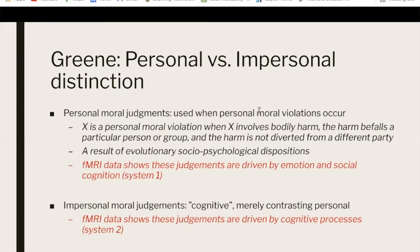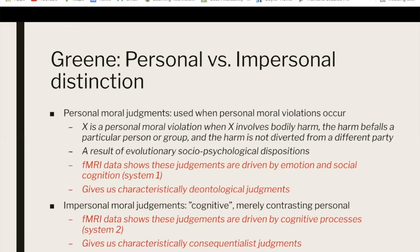These neuroscientific data led Greene to stronger normative conclusions. He claims that personal and emotional processes bring about characteristically deontological moral judgments, while cognitive processes bring about characteristically consequentialist judgments. These two subsystems are in conflict with one another when we're morally deliberating, with one ultimately giving us a final judgment. This empirical information, Greene argues, gives us a reason to prefer characteristically consequentialist moral judgments and discount any deontological intuitions we might have.